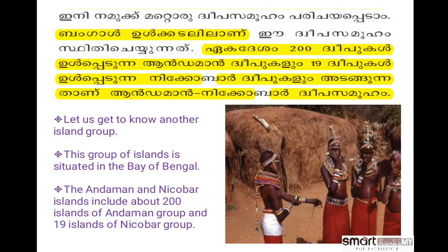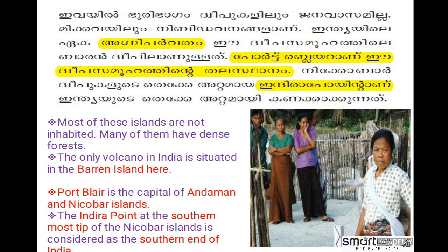The Andaman and Nicobar Islands are situated in the Bay of Bengal. The group includes 200 islands of the Andaman group and 19 islands of the Nicobar group. Most of these islands are not inhabited and many have dense forests. The only active volcano in India is situated on Barren Island here. Port Blair is the capital of the Andaman and Nicobar Islands. Indira Point, at the southernmost tip of the Nicobar Islands, is considered the southern end of India.